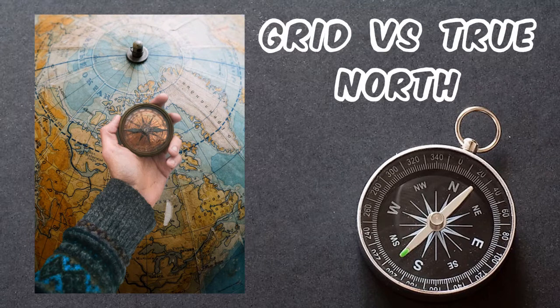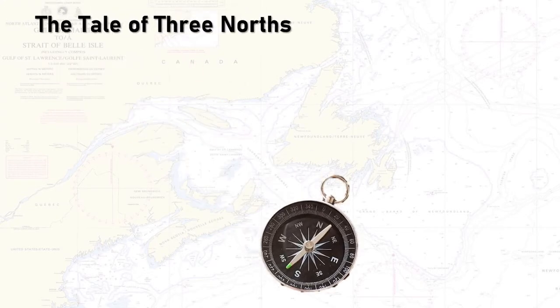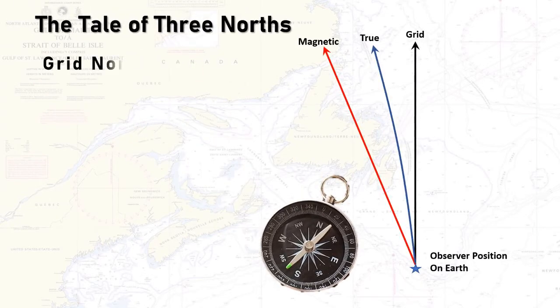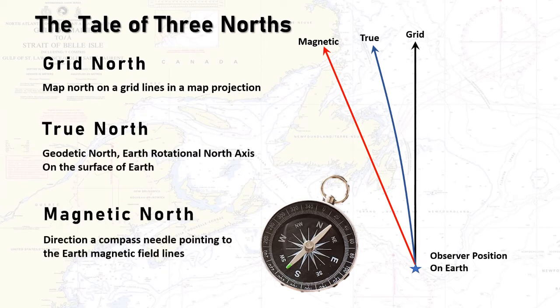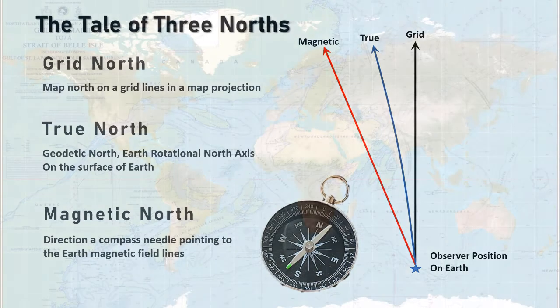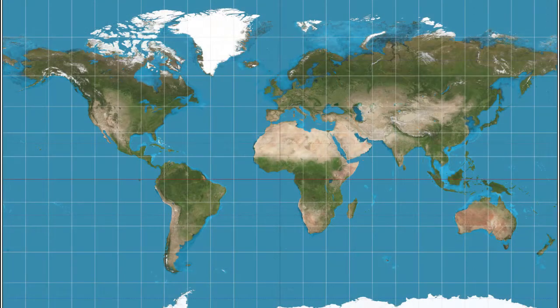There are three different types of north: the true, the grid, and magnetic north. Grid north is a navigational phrase used to refer to the northward direction on grid lines in a map projection. Grid north contrasts true north and magnetic north in that it is aligned to grid lines and always points upward on a map.